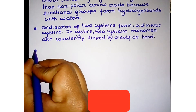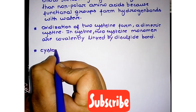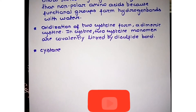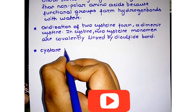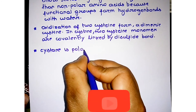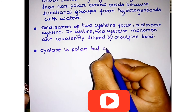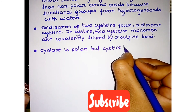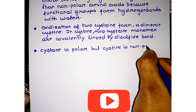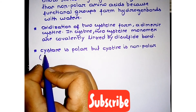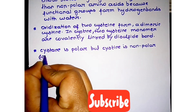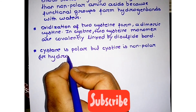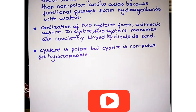Cysteine is polar but cystine is non-polar. There is a difference between the nature of cysteine and cystine, although cystine is formed from cysteine. Cystine is non-polar and hydrophobic due to the presence of the disulfide bond.